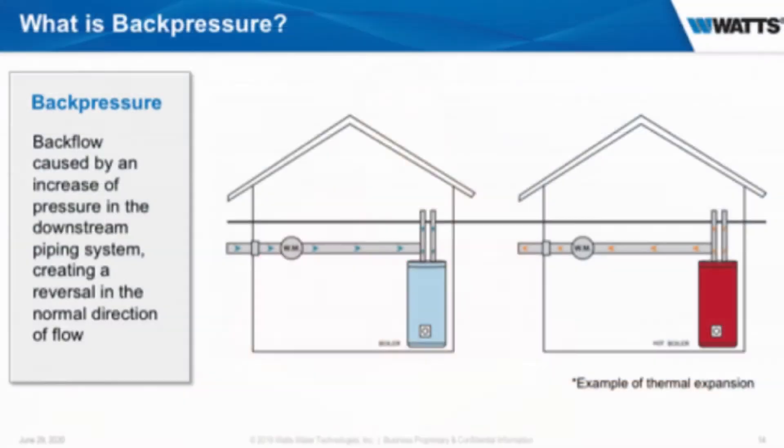Back pressure is the other type. Back pressure backflow is caused by an increase in pressure on the downstream side of a piping system. The best example is your water heater — you're heating the water up, it's expanding, it's creating pressure, and that pressure needs to go somewhere, so it can push back into your system. If you have a boiler with chemicals in it and don't have the proper protection, those chemicals can push back into your potable water — what you're drinking from your faucet or showering in.